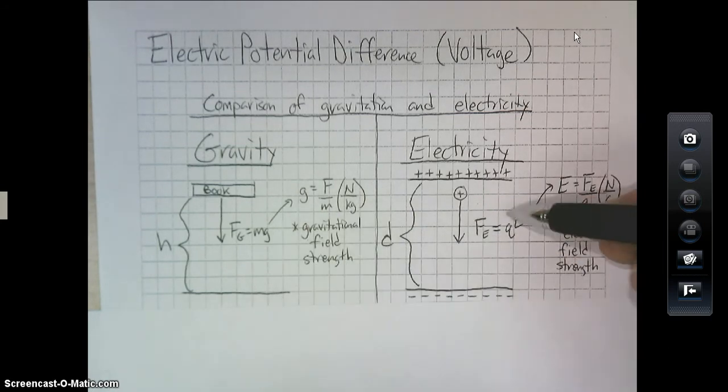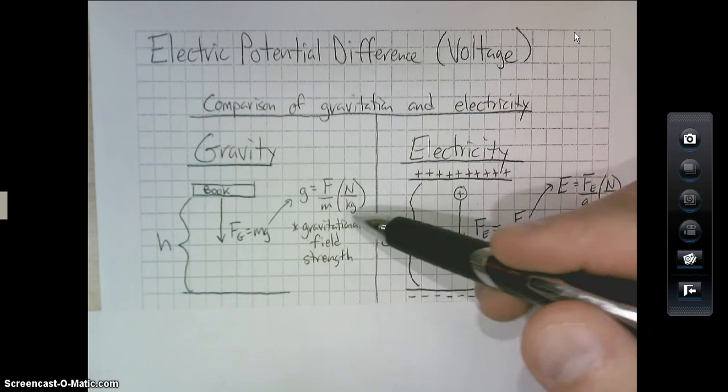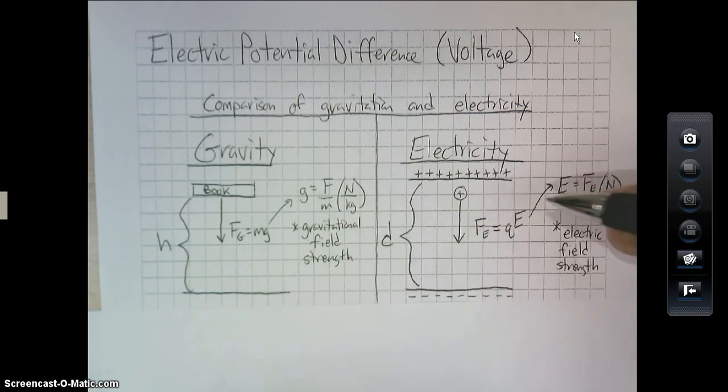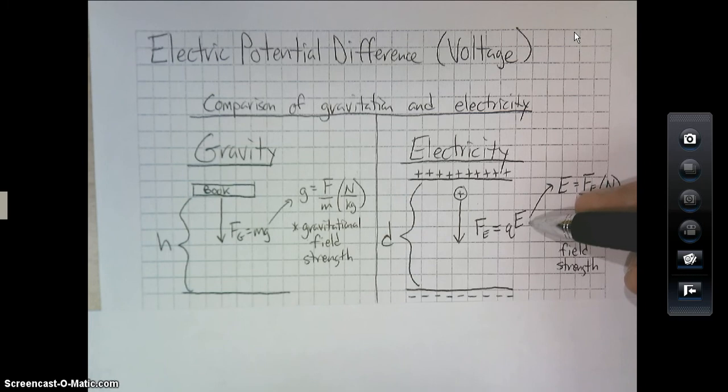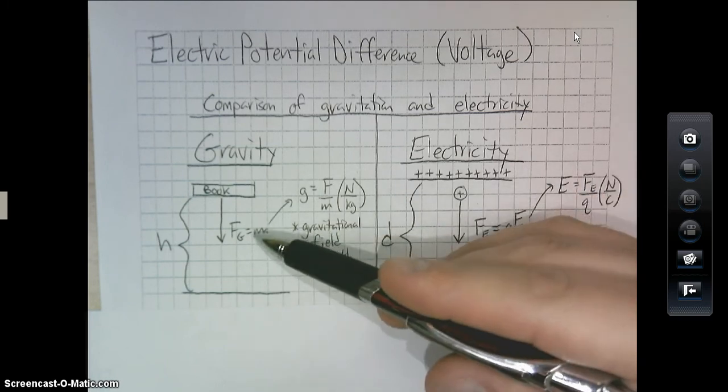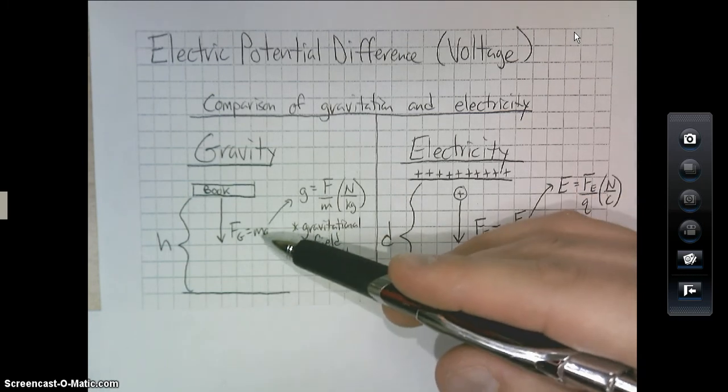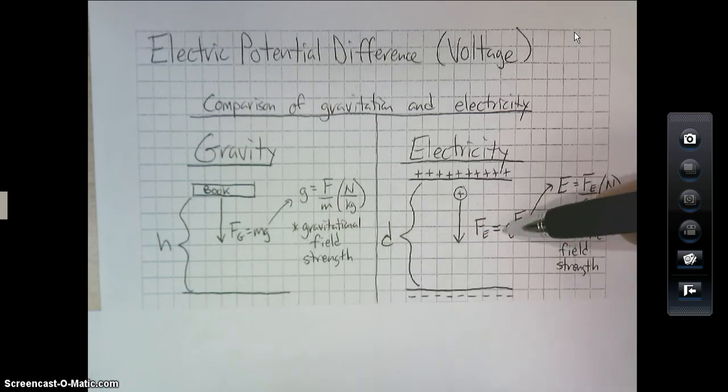We're going to call it an electrical force, just like this was a gravitational force. And that would be equal to, well, instead of a mass, it's acting on a charge, so Q. And instead of a gravitational field, it's being acted on in an electrical field. So you see the parallels here between F of G is equal to Mg and F of E is equal to QE.